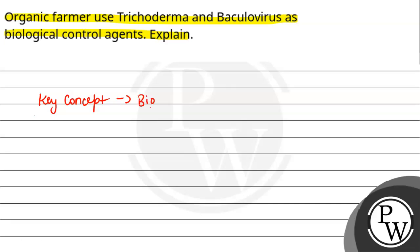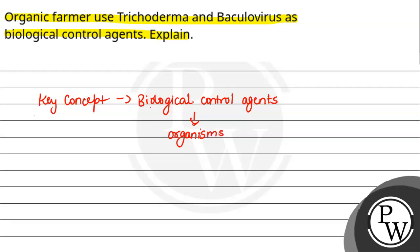The key concept here is biological control agents. Biological control agents are organisms or natural products that help in managing or controlling agricultural pests — including insects, weeds, and plant pathogens.